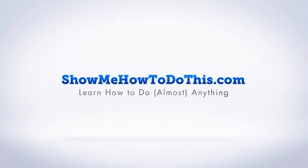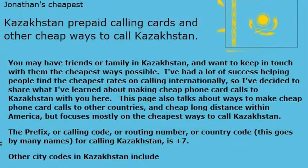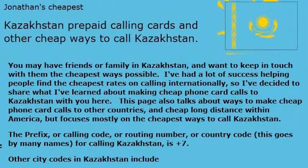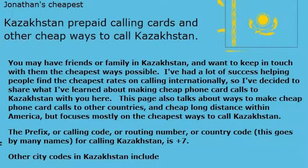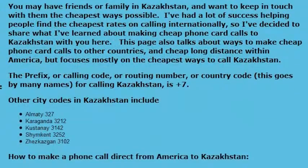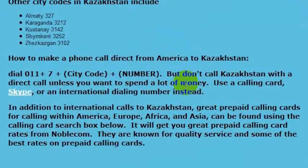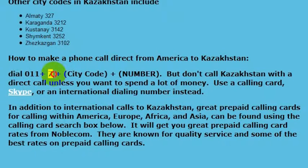I have a friend from Kazakhstan named Aliyah and I would really like to visit her at some point, but in the meantime I would like to be able to pick up the phone and call and talk with her. In order to do that I need to know the international dialing code for Kazakhstan, which is quite simple — it's just 7. To call Kazakhstan, all I would have to do is dial 011 (the international dialing prefix) and then 7 (the country code for Kazakhstan). 011 gets me out to an international line and then 7 gets me to Kazakhstan.